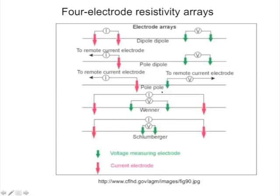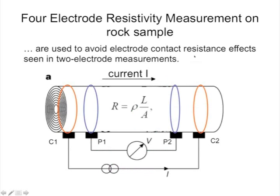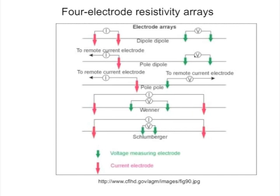You can also do a pole-pole survey where you remove one of the potential electrodes too — you put one of the potential electrodes far away as well, so maybe they're both outside the valley on opposite sides. Then you just have two electrodes to move around. You folks used in the field the Wenner array, where the spacing between the potential electrodes — the green ones — is called A, and the potential electrodes are always centered between the current electrodes. We maintain a distance of A also between the current electrode and the nearest potential electrode, so the whole width of the array is 3A.